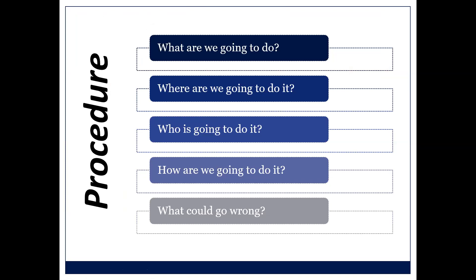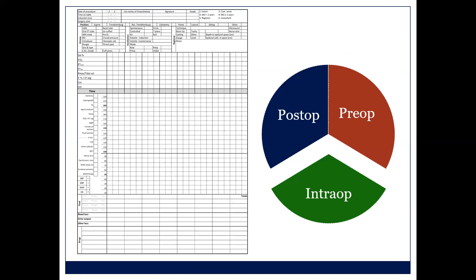What could go wrong? You need to think through the worst case scenario before you go to theater. One problem is putting spinals into caesarean patients and then having the patient start bleeding, requiring conversion to GA. When you look back, the patient had multiple risk factors for PPH. Think: if this patient gets into trouble, what sort of anesthetic do I want on board, and what setting? Should this patient be in a district hospital at all? Be conservative about where you do these things.